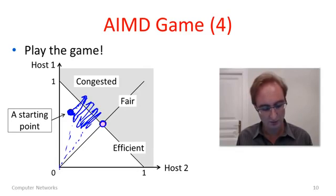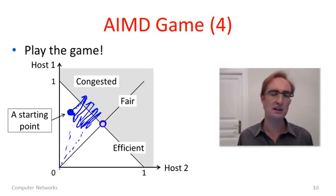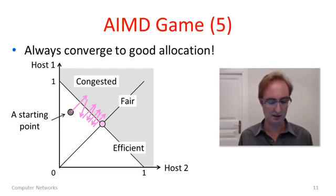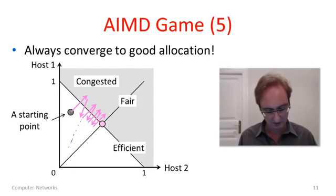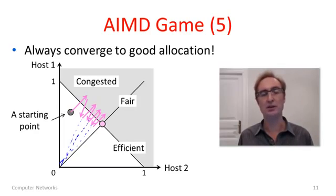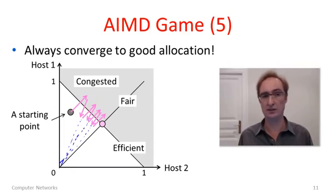If you play the AIMD game from any point, you'll end up at a fair and efficient allocation. These different lines from multiplicative decrease all point towards the origin, so you can see their slope is changing. The point here is that AIMD will always converge to a good allocation no matter where you start — that's pretty handy in a scheme.